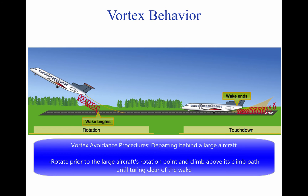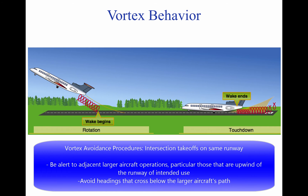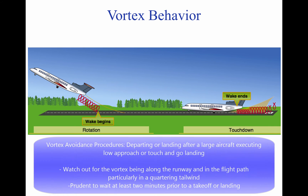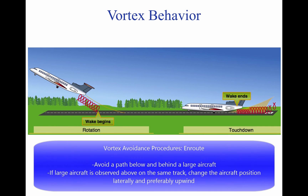Departing behind a large aircraft: rotate prior to the large aircraft's rotation point and climb above its climb path until turning clear of the wake. For intersection takeoffs on the same runway, be alert to adjacent larger aircraft operations, particularly upwind of the runway of intended use. If an intersection takeoff clearance is received, avoid headings that cross below the larger aircraft's path. If departing or landing after a large aircraft executing a low approach, missed approach, or touch-and-go landing, the vortex hazard may exist along the runway and in the flight path, particularly in a quartering tailwind — it is prudent to wait at least two minutes. En route, avoid a path below and behind a large aircraft; if a large aircraft is observed above on the same track, change position laterally and preferably upwind.